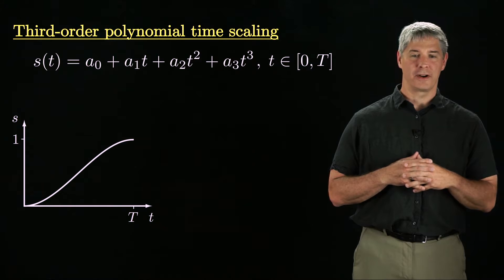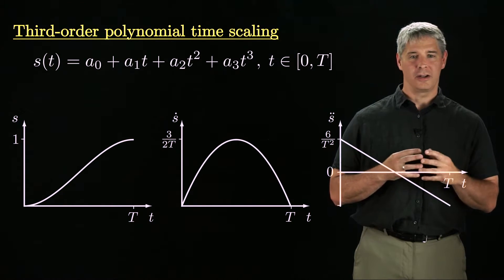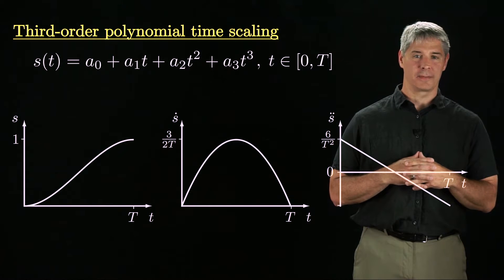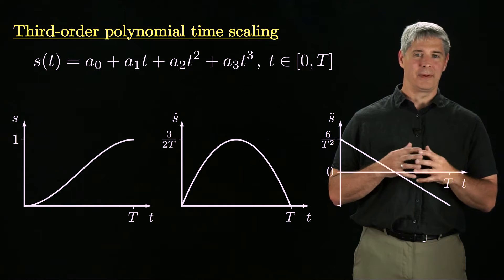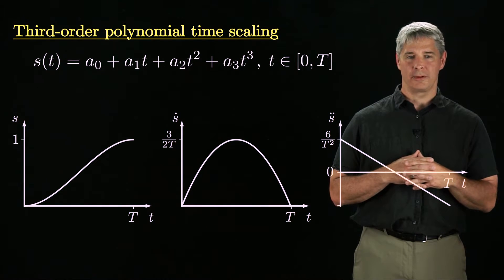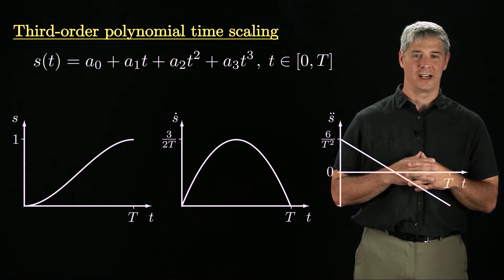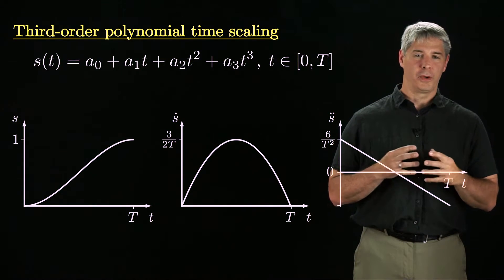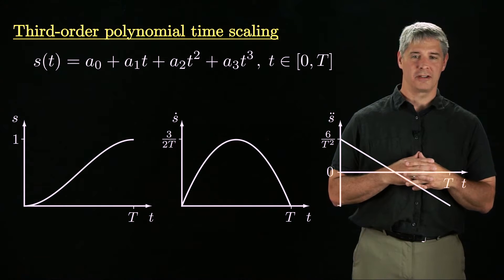Now we can plot s as a function of t, as well as s dot and s double dot. Notice that s is a cubic, s dot is a parabola, and s double dot is a line. s dot begins and ends at zero, but s double dot jumps discontinuously to six over capital t squared at time zero.